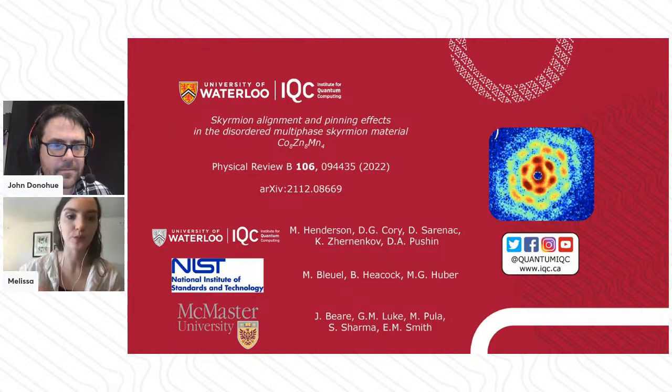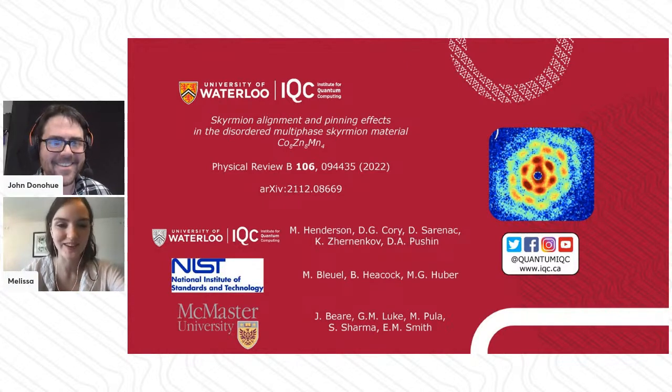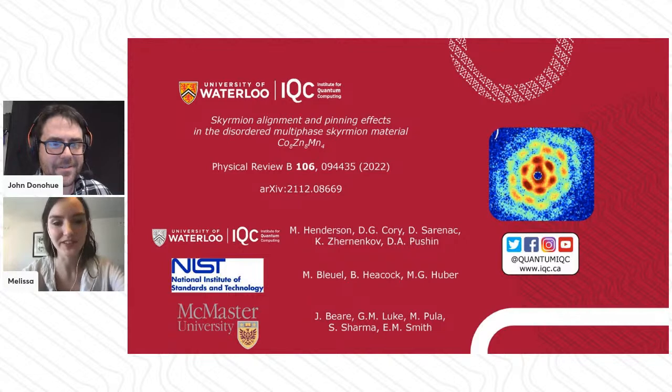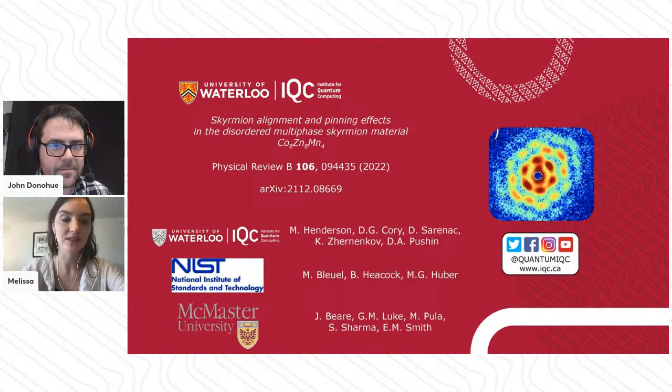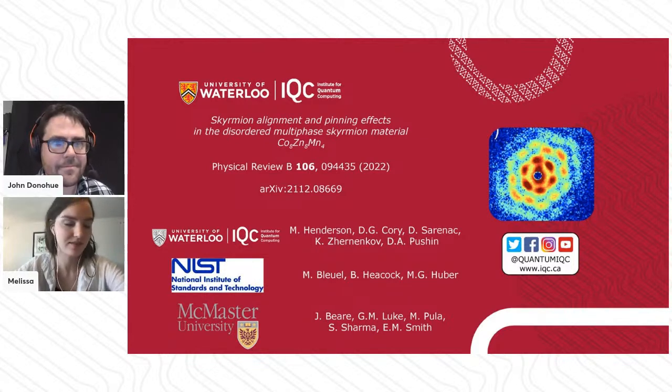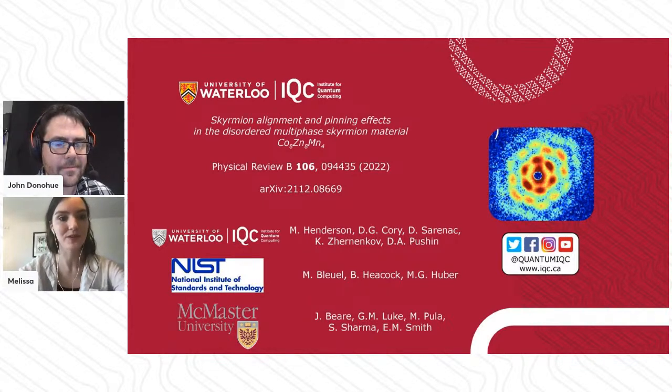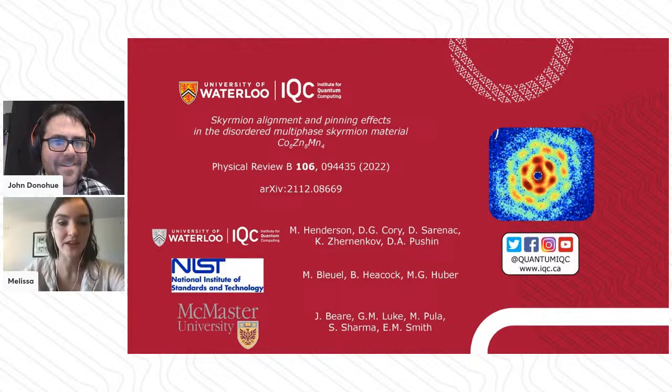That's always a time-consuming process, even confirming that you have a skyrmion material to begin with before going through the arduous process of submitting a proposal to a neutron facility to then test what you actually want to test. People at McMaster are invaluable to these experiments. Then, the next step of actually performing the neutron experiment at NIST - you need these crazy beam lines with ridiculous infrastructure and million-dollar equipment that is inaccessible anywhere else in the world.